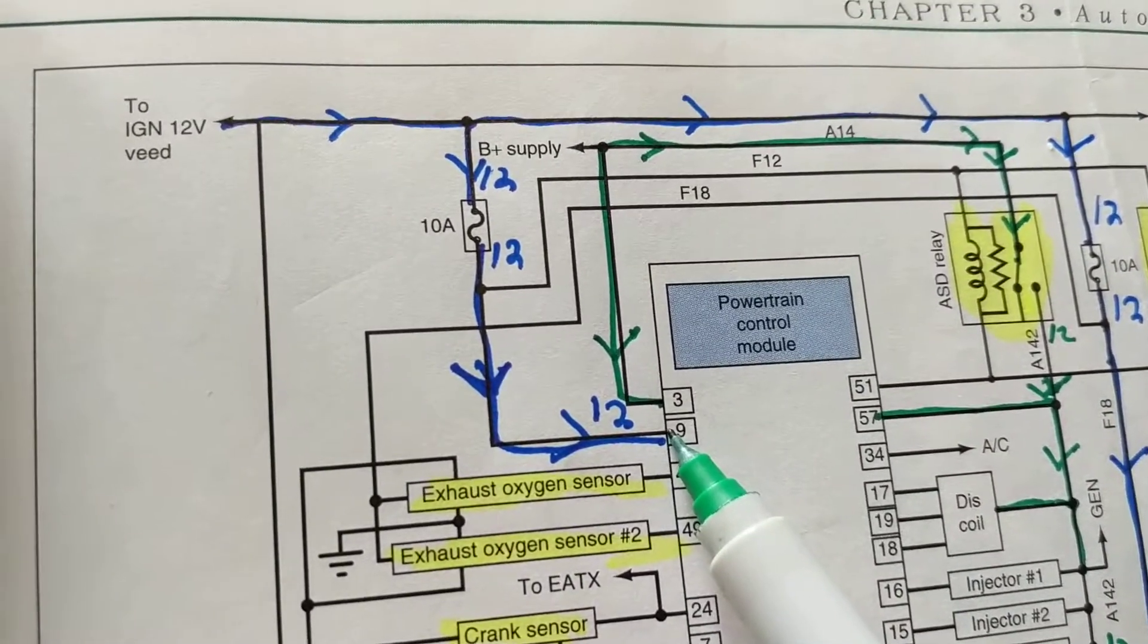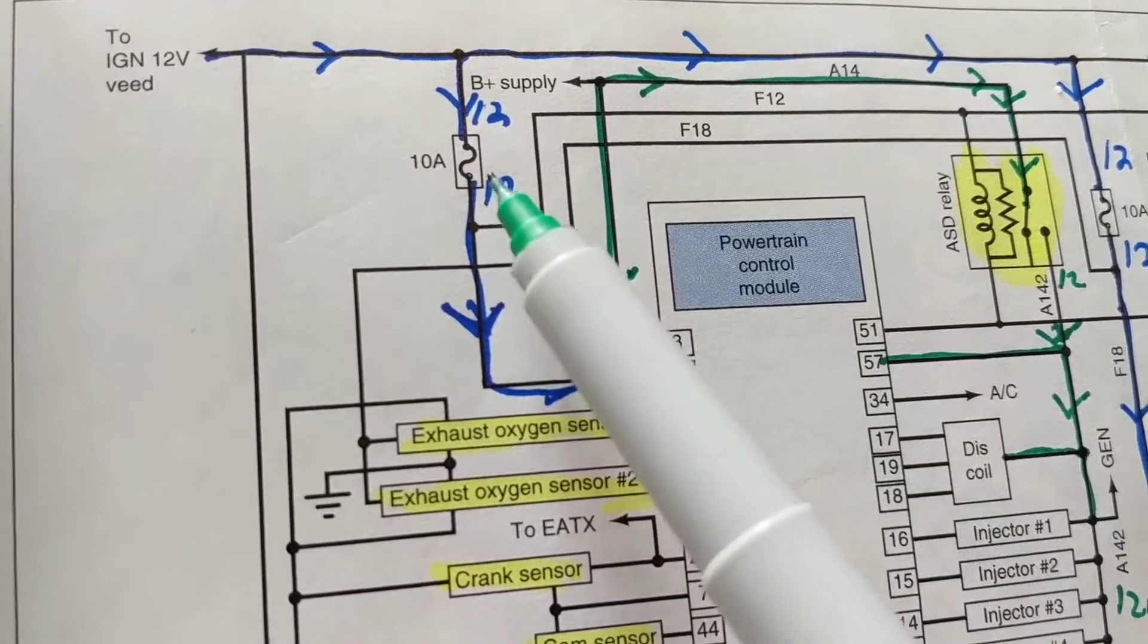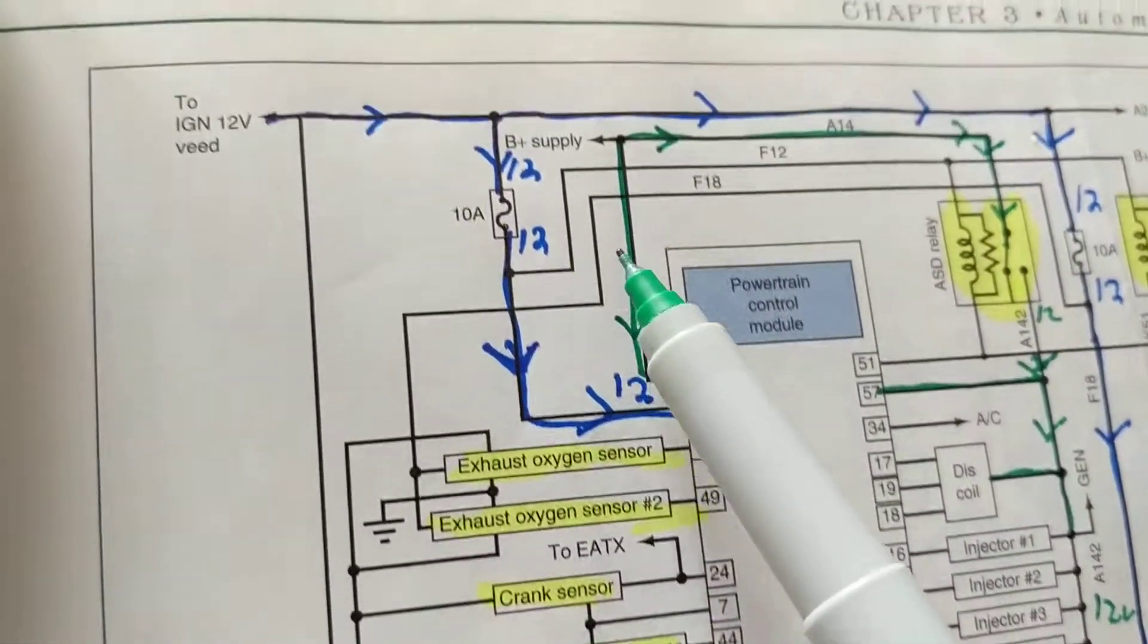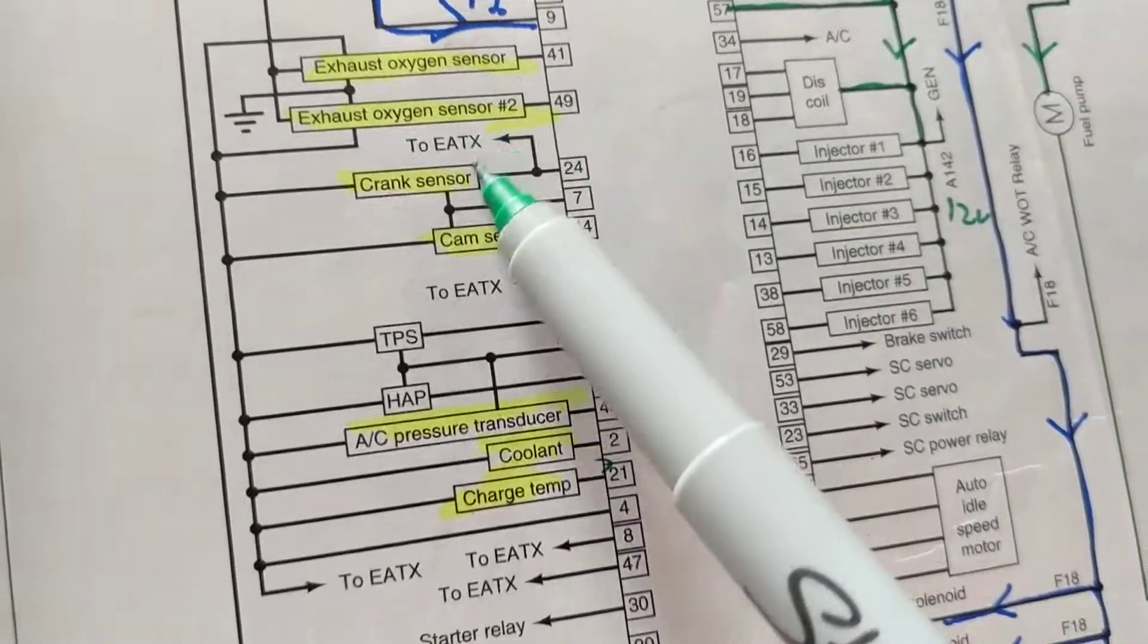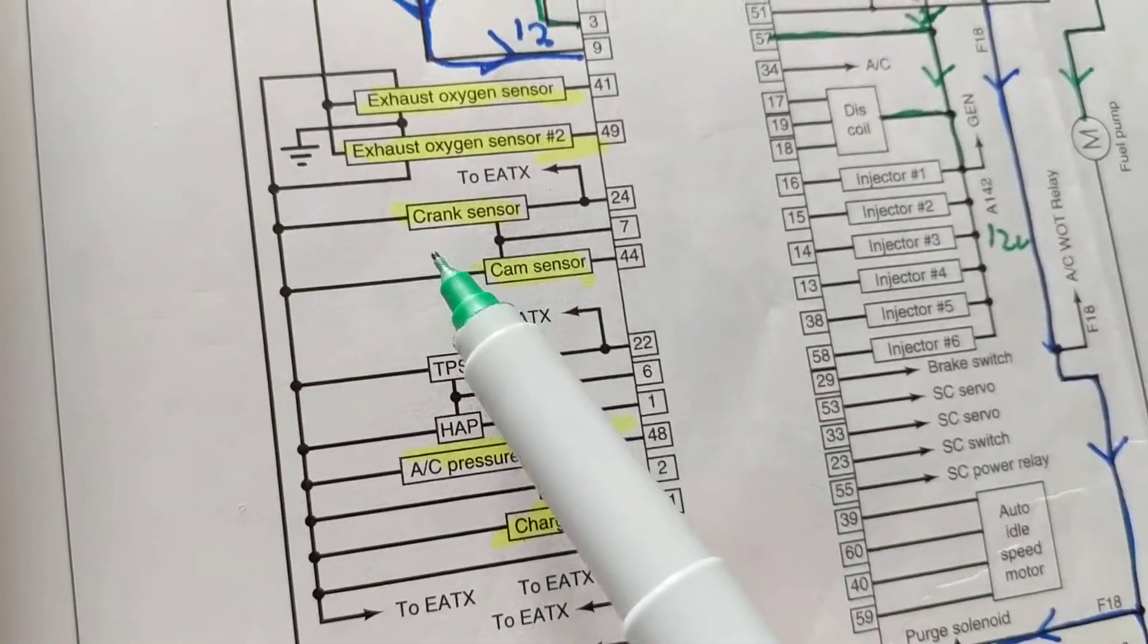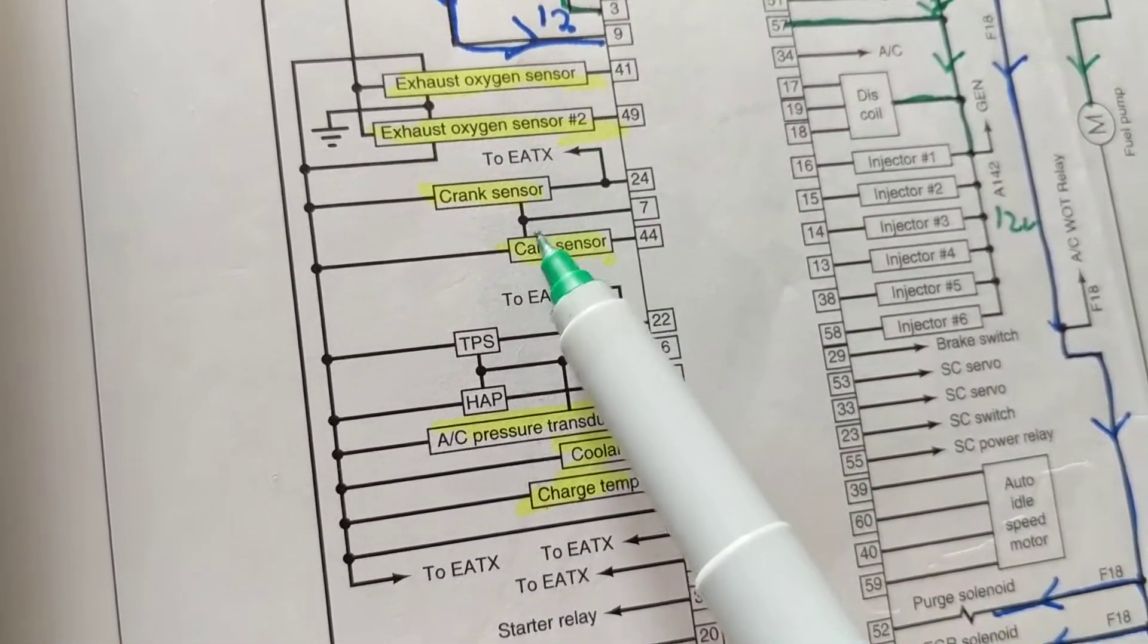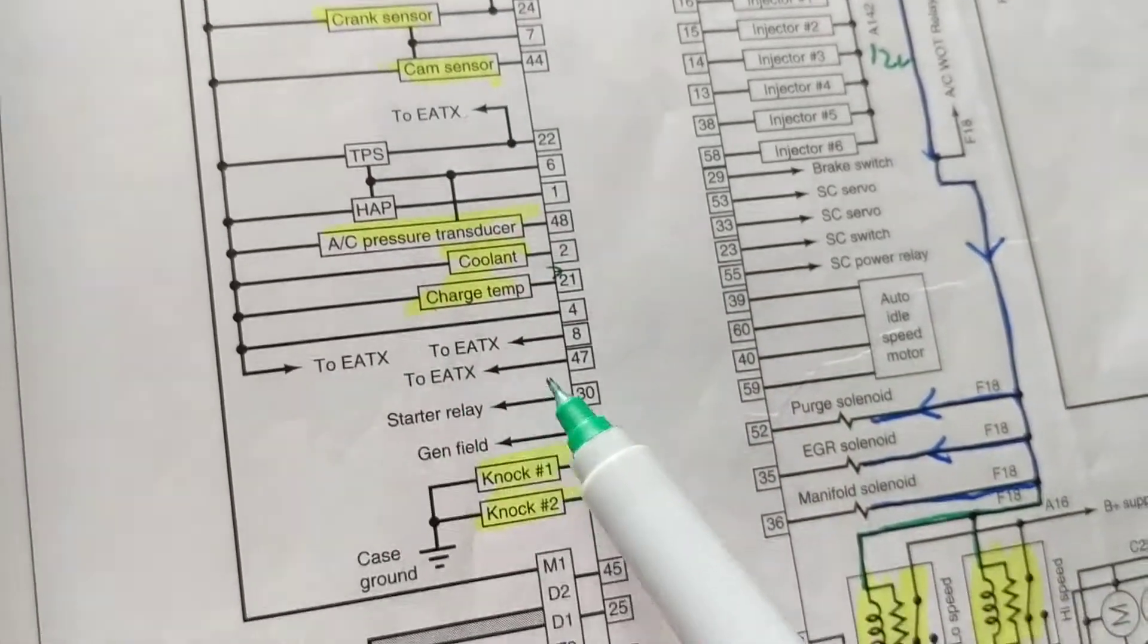So let's say B+ first. You have B+ going into pin nine through a fuse—how much is that fuse? 10 amps. Then you have sensors. Yeah, you see I highlighted them in yellow. These are sensors I went over quite often in other videos.